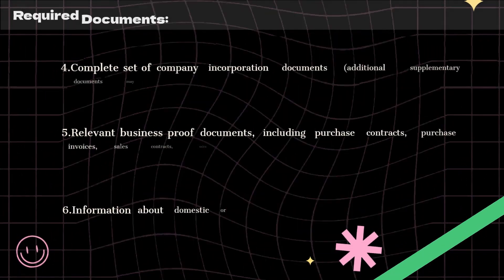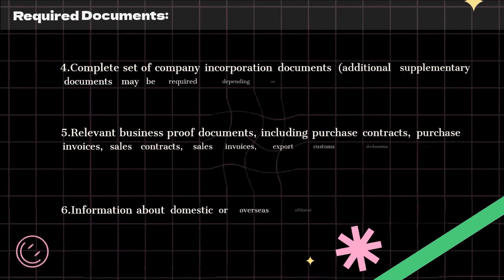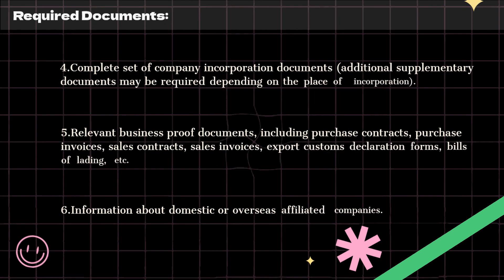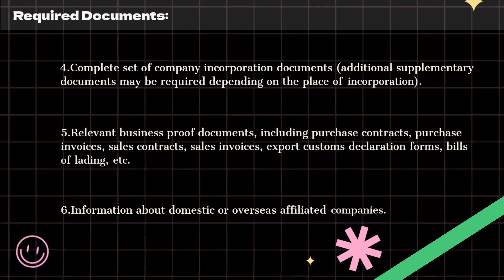4. Complete set of company incorporation documents. Additional supplementary documents may be required depending on the place of incorporation. 5. Relevant business proof documents, including purchase contracts, purchase invoices, sales contracts, sales invoices, export customs declaration forms, bills of lading, etc.